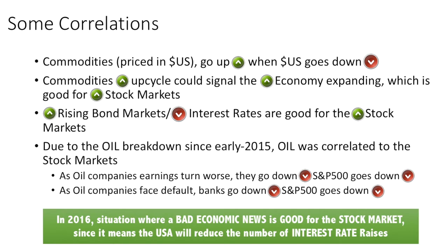Since 2015, oil started to get really correlated to the stock markets. When oil goes down, although it improves inflation, here's what happens: as oil goes down, earnings for oil companies turn out to be extremely bad. This affects stock indices like the S&P 500 — as earnings go south, it pulls down the S&P 500 and the entire stock market.